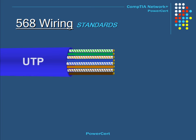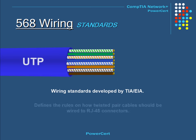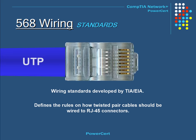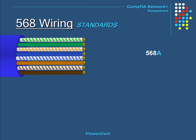The terms 568-A and 568-B refer to wiring standards developed by TIA/EIA, the Telecommunications Industry Association. These define the rules on how twisted pair cables should be wired to RJ45 connectors. The 568-A standard is wired in this order: white-green, green, white-orange, blue, white-blue, orange, white-brown, and brown.